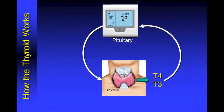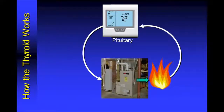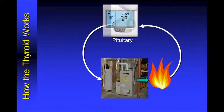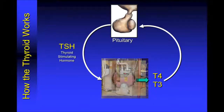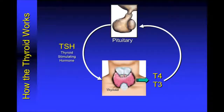If you think about your pituitary gland like a thermostat and your thyroid like a furnace, the relationship between the pituitary and the thyroid follows this same model. Just as the thermostat senses the temperature of the air in your home and signals the furnace to put out more heat if it's needed, your pituitary gland senses the level of thyroid hormone in the blood and through thyroid stimulating hormone signals the thyroid to put out more hormone if it is required.